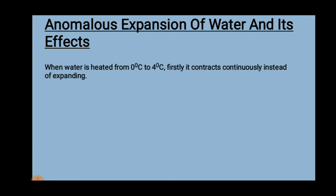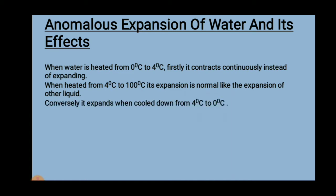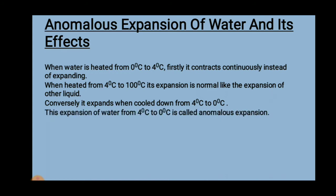Anomalous Expansion of Water and Its Effects. When water is heated from 0°C to 4°C, it contracts continuously instead of expanding. When heated from 4°C to 100°C, its expansion is normal like the expansion of other liquids. Conversely, it expands when cooled down from 4°C to 0°C. This expansion of water from 4°C to 0°C is called anomalous expansion.